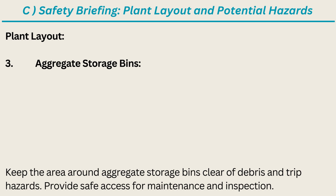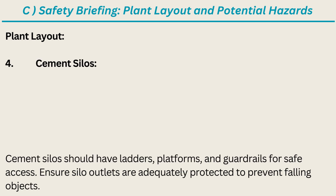3. Aggregate Storage Bins — keep the area around aggregate storage bins clear of debris and trip hazards. Provide safe access for maintenance and inspection. 4. Cement Silos — cement silos should have ladders, platforms, and guardrails for safe access. Ensure silo outlets are adequately protected to prevent falling objects.